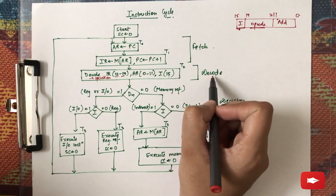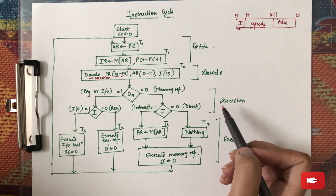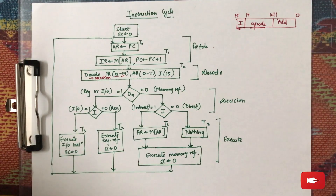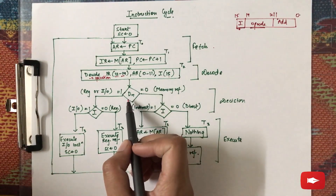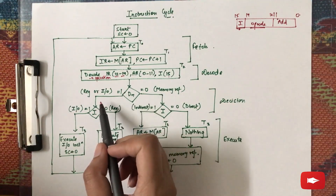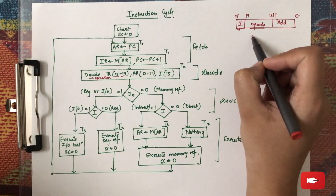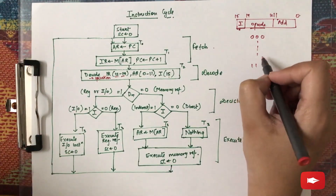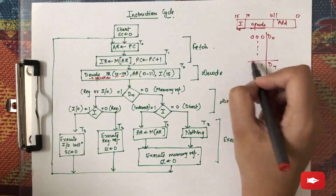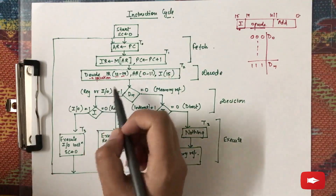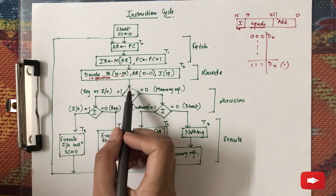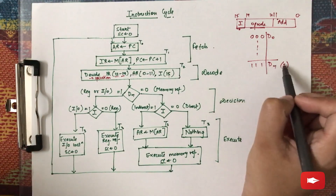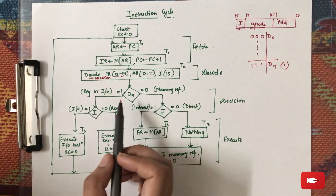In the decision phase, we decide what kind of instruction it is. There are three types of instructions: memory reference, register reference, and input-output reference. D7 decides the type of instruction. The opcode can have values from 000 to 111, that is D0 to D7. If the value of D7 is 1 (opcode 111), it will be either a register reference or input-output reference instruction. If it is any other value, it can be a memory reference instruction.